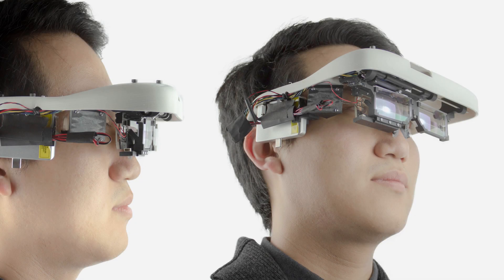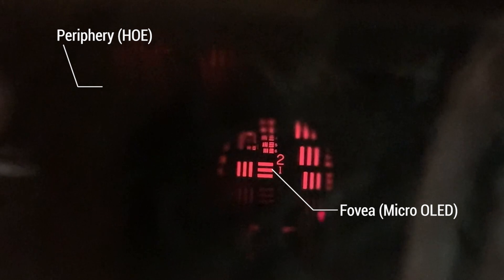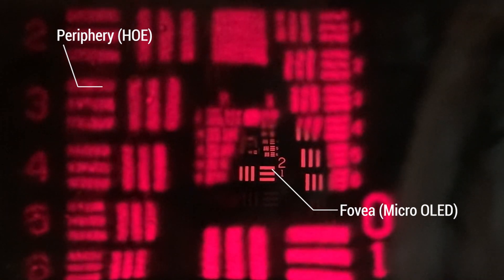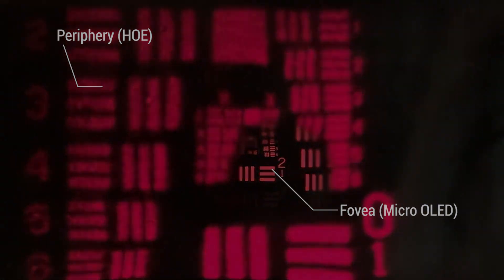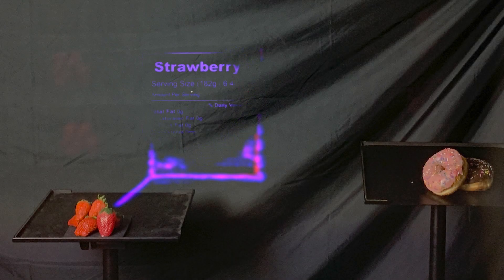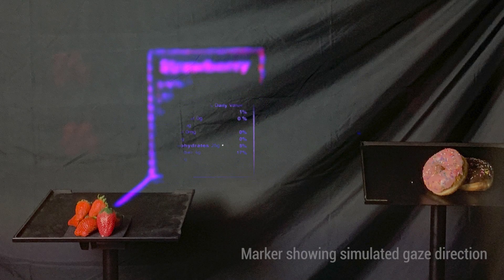Our foveated AR display optically combines light from two sources: a high-resolution, small-field-of-view foveal display, and a low-resolution, large-field-of-view peripheral display.